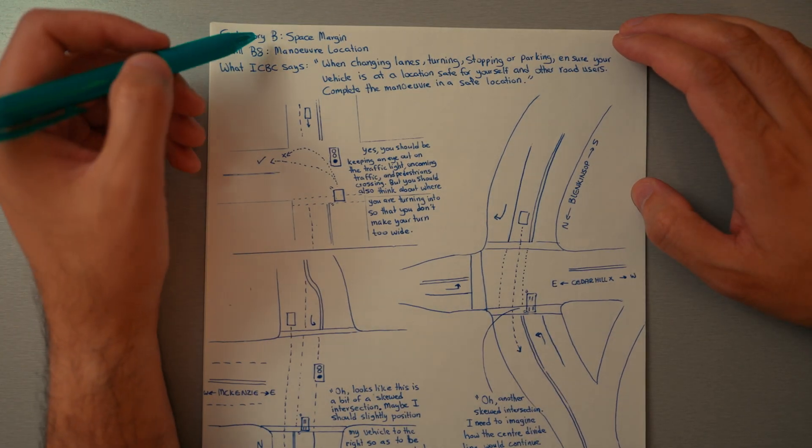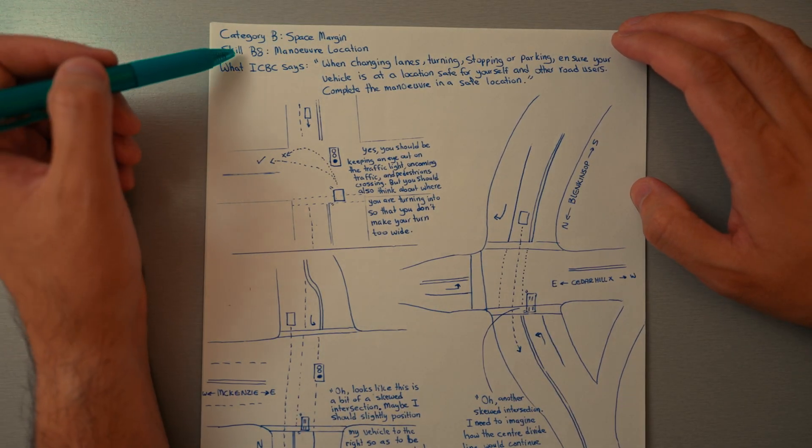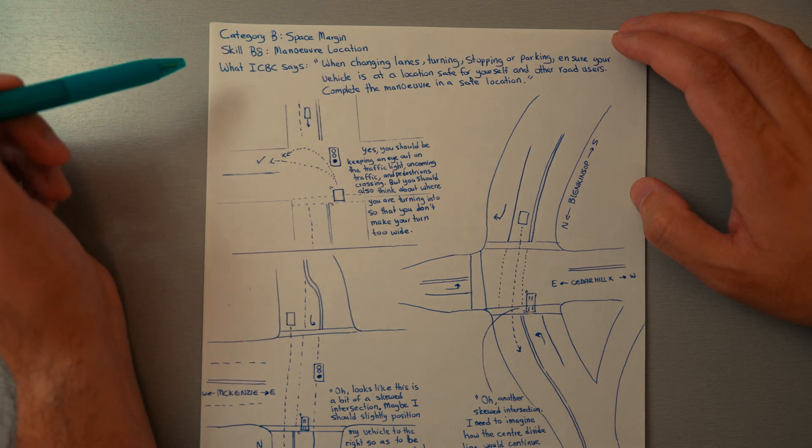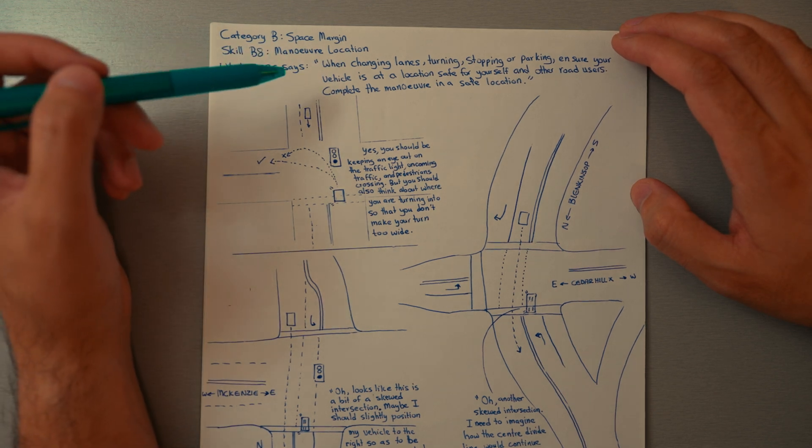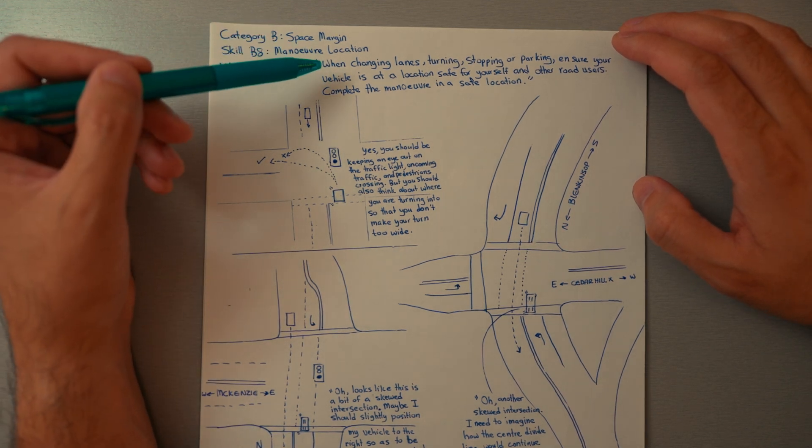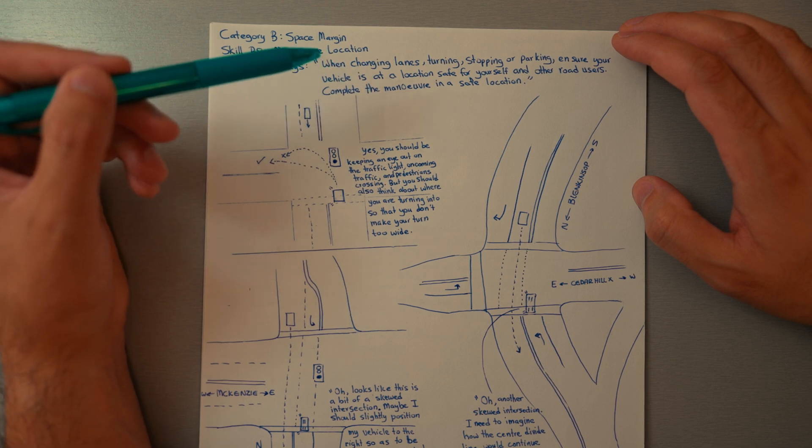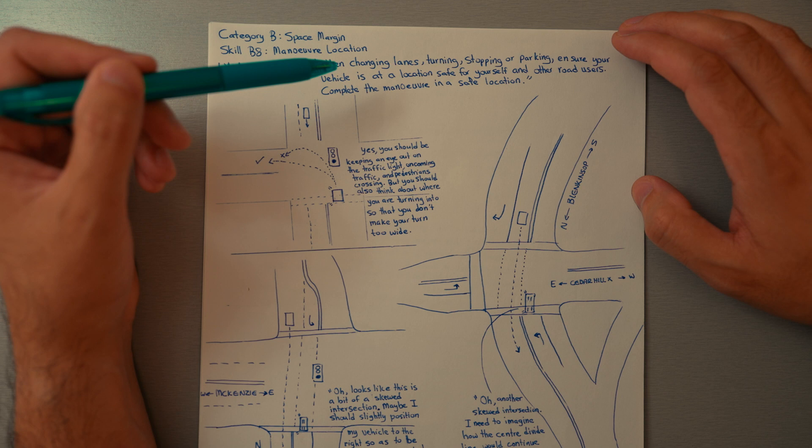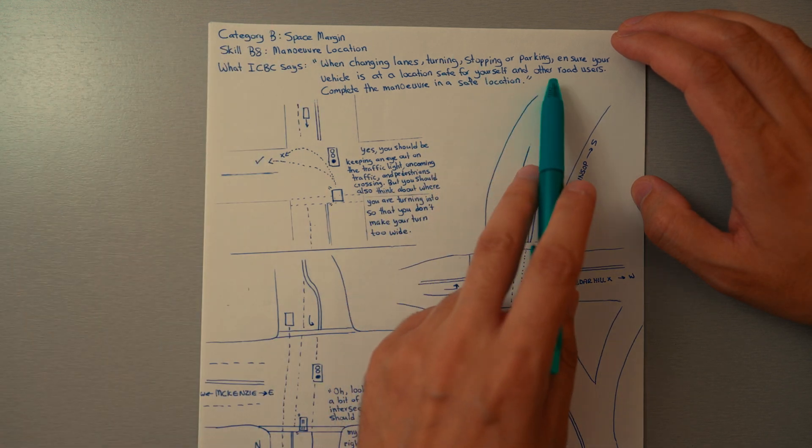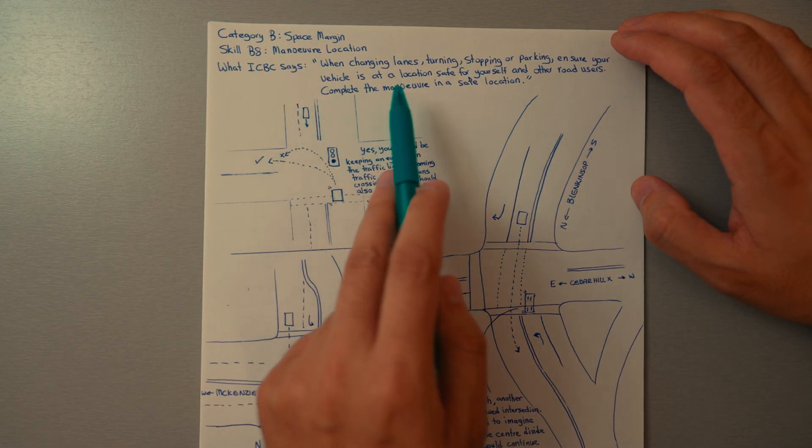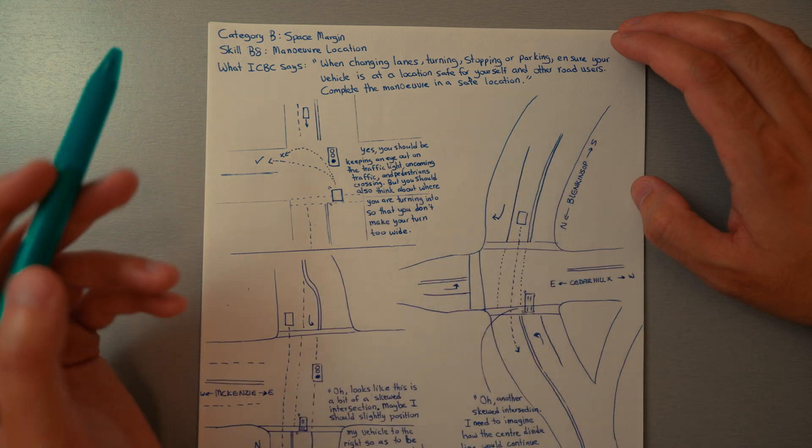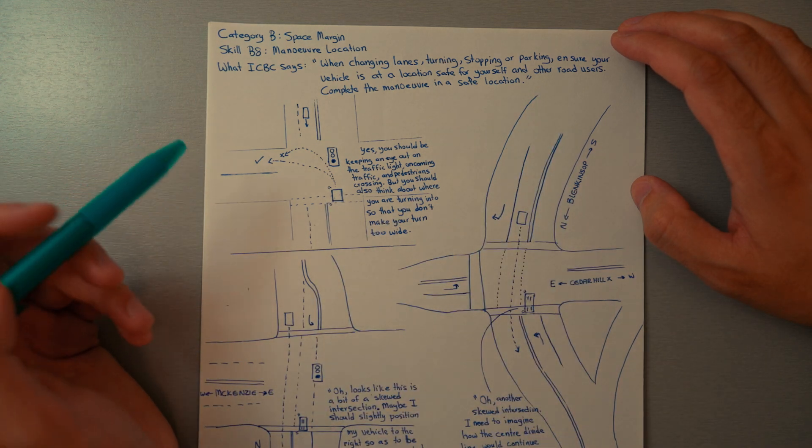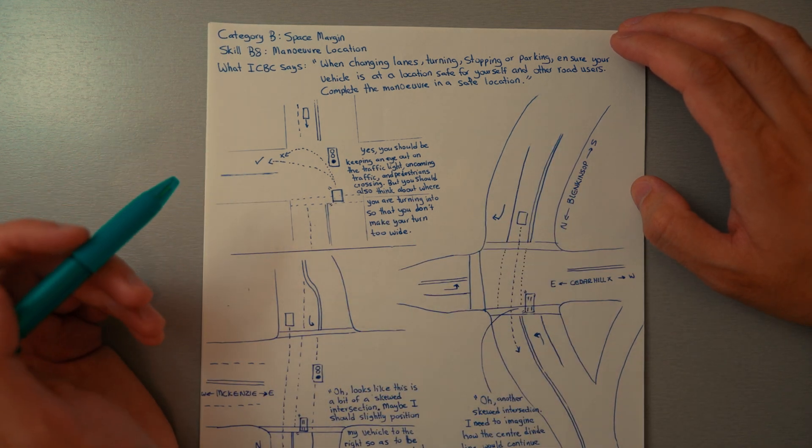Category B Space Margin, Scale B8: Maneuver Location. Let's see what ICBC says. When changing lanes, turning, stopping, or parking, ensure your vehicle is at a location safe to yourself and other road users. Complete the maneuver in a safe location. Let's look at a couple examples.